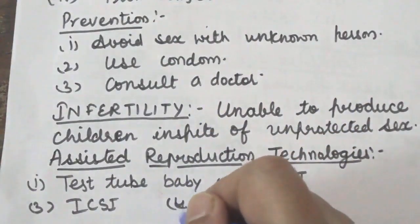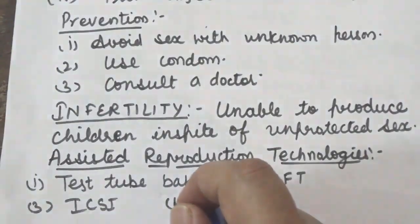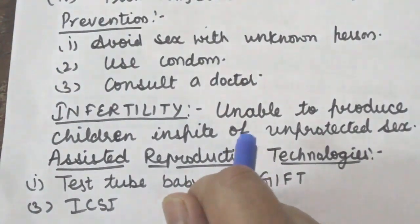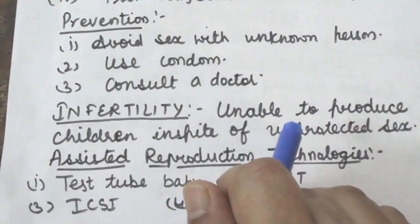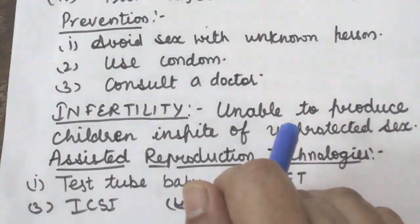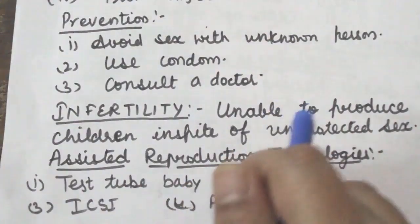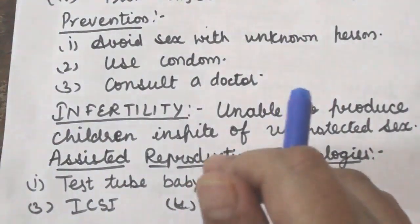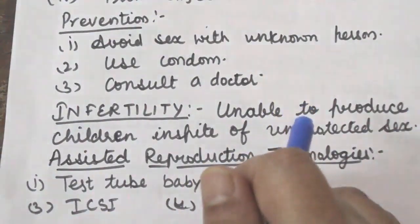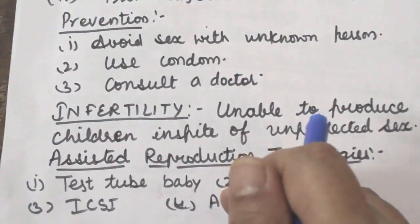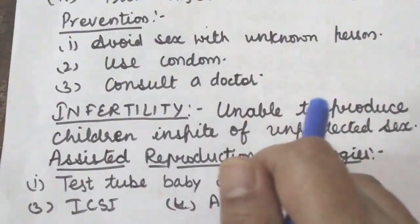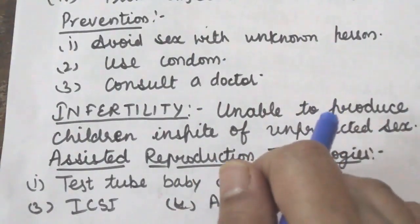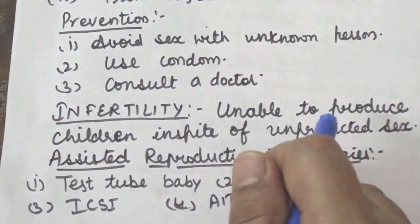The success rate of test tube baby technique is less than 20%. To increase the chance of success, the prospective mother is given fertility drugs which cause many ovarian follicles to mature at the same time, releasing many eggs simultaneously and increasing chances of success. The additional embryos are transferred to surrogate mothers for completion of development or can be frozen for later use. Numerous children can be produced by in vitro fertilization without any abnormality.